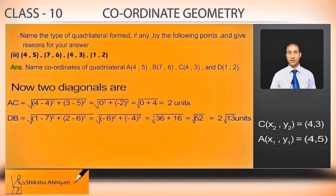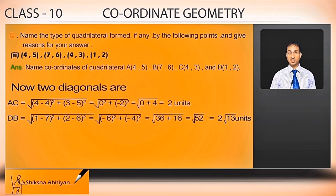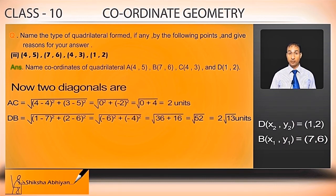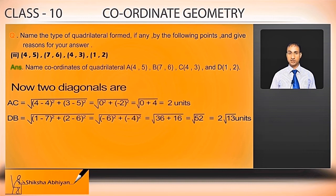Diagonal DB equals under root of (1 minus 7) whole square plus (2 minus 6) whole square, taking D's coordinates as (x2,y2) and B's coordinates as (x1,y1). 1 minus 7 is minus 6 whole square and 2 minus 6 is minus 4 whole square. Minus 6 squared is 36 and minus 4 squared is 16, so root of 36 plus 16 is root 52, equal to 2 root 13 units.